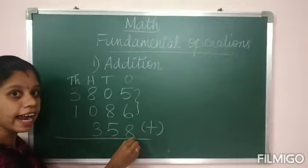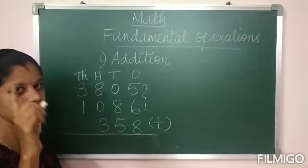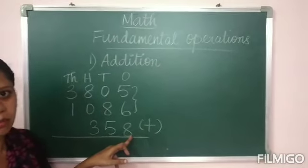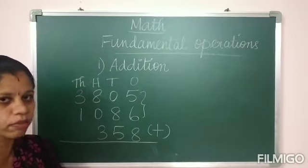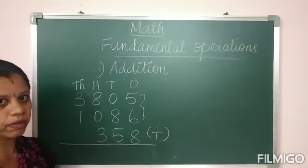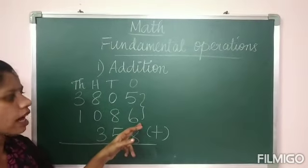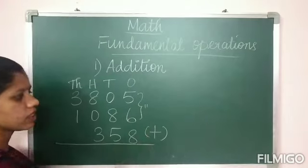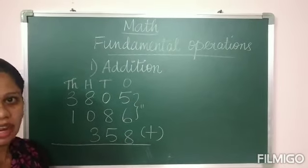After getting 11, you have to add the next number also. Keep 11 in your mind and add the remaining digits according to place value. By adding 5 and 6 you got 11.